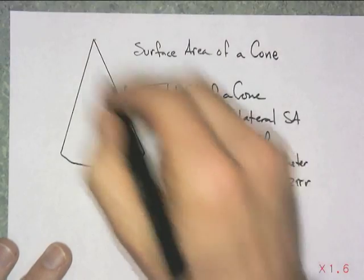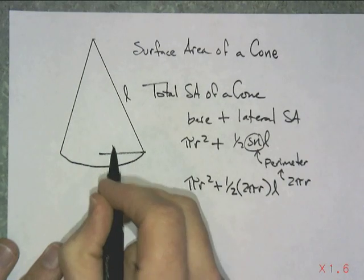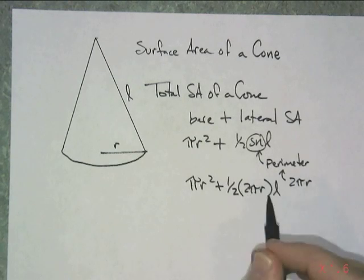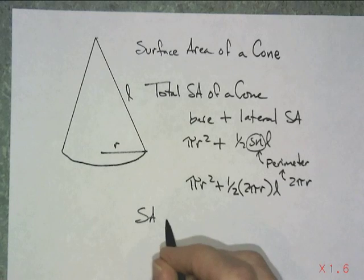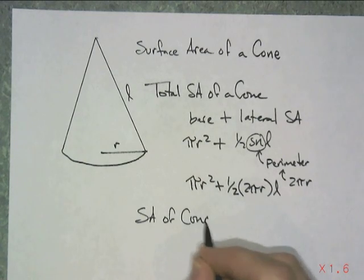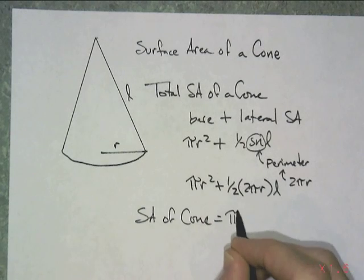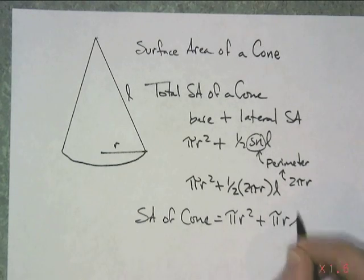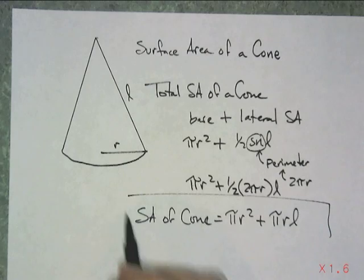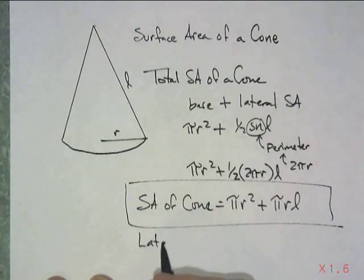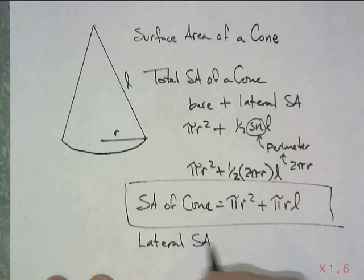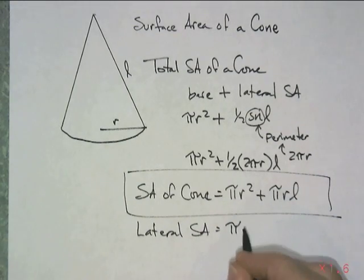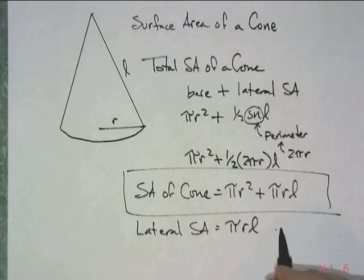So I get πr² plus one half 2πr. And I still keep my L, my slant height. That's the L that's going to go up there. And I need my r. So the 2's, the half and the 2 will cancel out. So I'm left with surface area of a cone. It's going to be equal to πr² plus πrL. Really nice. And if you want just the lateral surface area, that doesn't include the base, you would just get πrL.